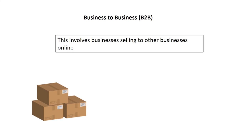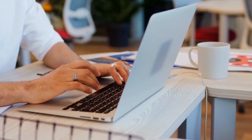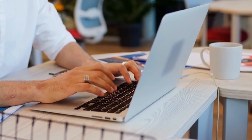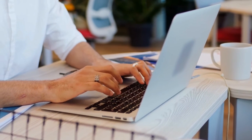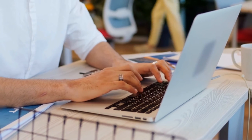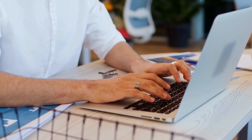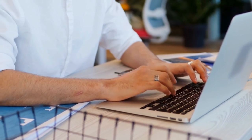Business to business (B2B) involves businesses selling to other businesses online — for example, transactions between a producer and a wholesaler, or a wholesaler and a retailer, through an online sales portal. Businesses can use specialist software to purchase resources, and the software would help find the cheapest supplier for the business to consider.